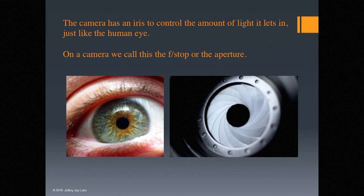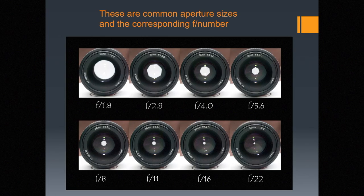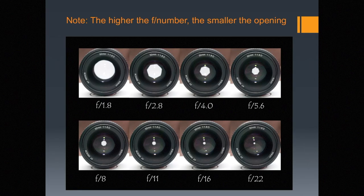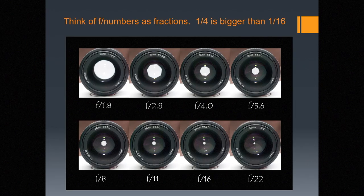On a camera, we call this the f-stop or the aperture — they mean the same thing. These are common aperture sizes and the corresponding f-numbers. The wide one in the upper left is 1.8, and then the smaller one is f22. Note that the higher the f-number, the smaller the opening. You might think of the f-stops as fractions — f4 is like 1/4, which is a lot bigger than f16, which is like 1/16.